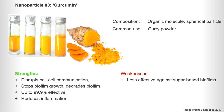A third nanoparticle is curcumin, which comes from turmeric root — as we all know, found in curry powder. Its strength is that it doesn't actually kill bacteria; instead it stops them from communicating with each other, and this causes biofilm growth to eventually stop and degrade. This is up to 99.9% effective. The only downside is it's less effective against sugar-based biofilms.